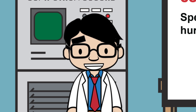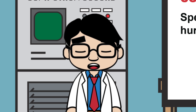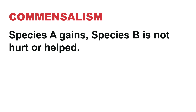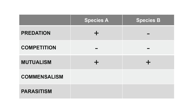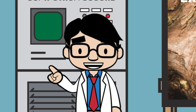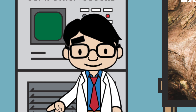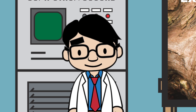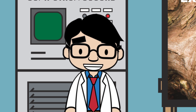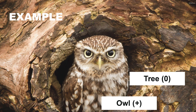Commensalism is probably one of the least known, but just as prevalent and important. In commensalism, one species benefits, but the other species is not hurt or helped — so that's a plus for species A and a zero for species B. An example of commensalism is the interaction between owls and trees. The owl benefits because it gets a home, but the tree doesn't benefit nor is it harmed by the owl living in it.